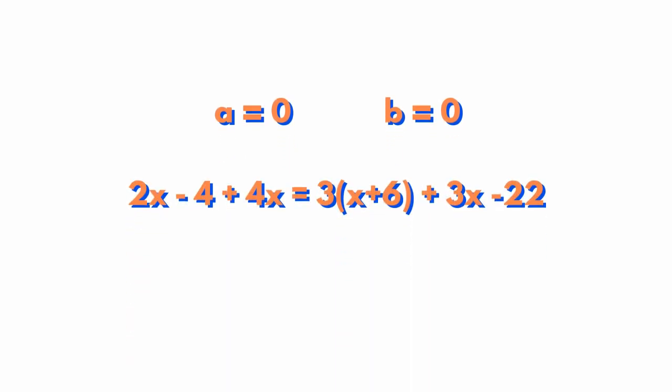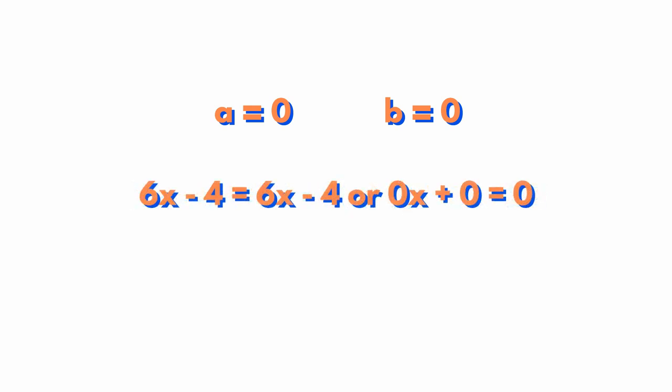Let's see what happens when b equals 0 and a is different than 0. When a is different than 0, we have 0x + b = 0. That means that x has to be 0 as well, and x equals 0 is the solution to our equation.